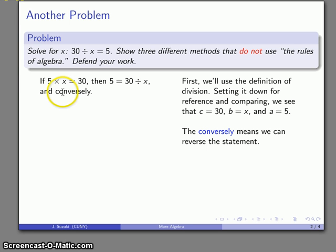And here's why the conversely part is important, because conversely means that if I have this, then I also have 5 times X equal to 30. So that gives me a new statement by the definition of division.